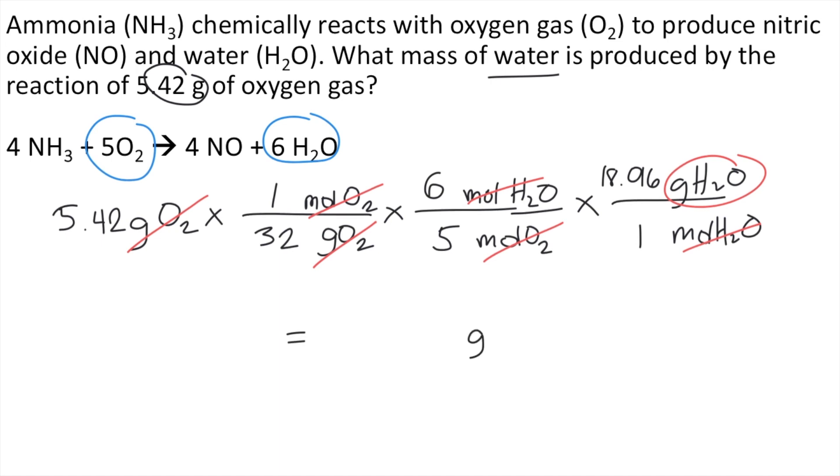Since we already reached our final unit, all we have to do is solve this in your calculator. Just type 5.42 times 1 divided by 32 times 6 divided by 5 times 18.016 divided by 1. And you will get approximately 3.66 grams of H2O. And this is the answer to the question.